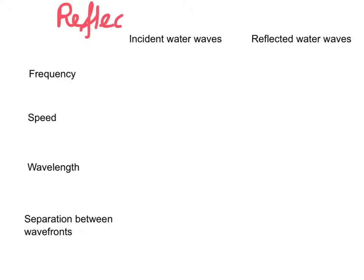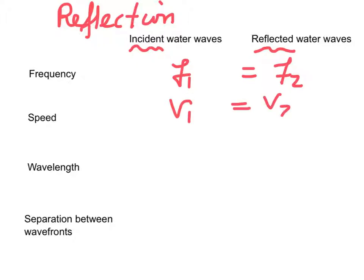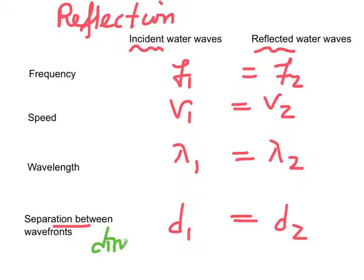For reflection, since both the incident water wave and the reflected water wave are shown on the same water region, therefore both waves have the same frequency, same speed, same wavelength, and same separations between successive wave fronts. Only the directions of wave travel are different in reflection.